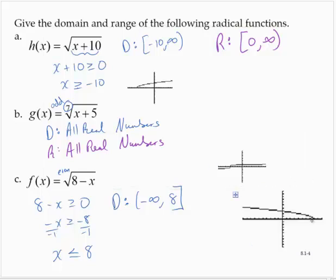I see that the domain is sort of that ending point here at 8, but it's going all the way to the left, so negative infinity comma 8. As for the range, it starts at 0 and increases. So the range is bracket 0 comma infinity.